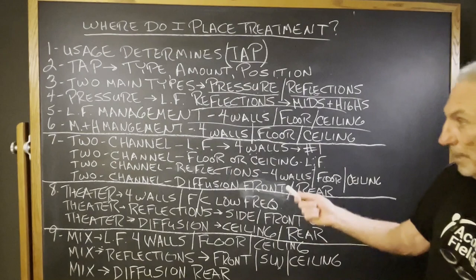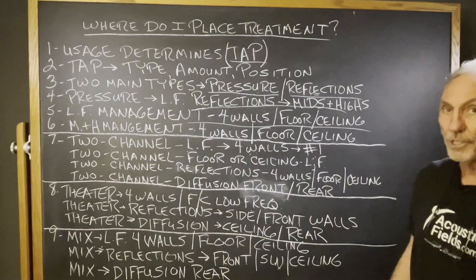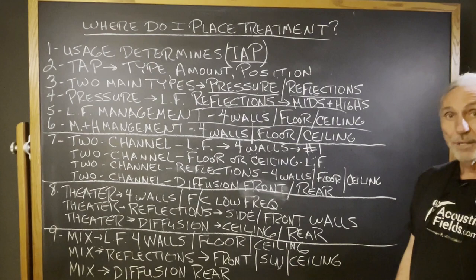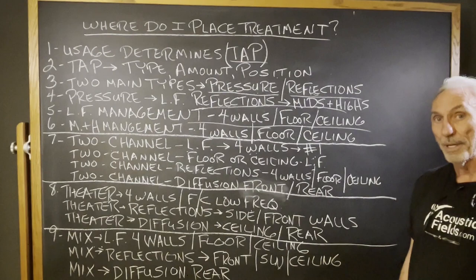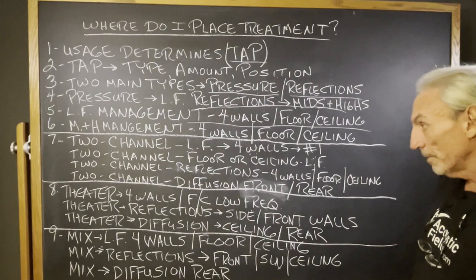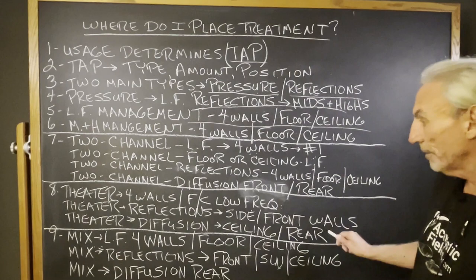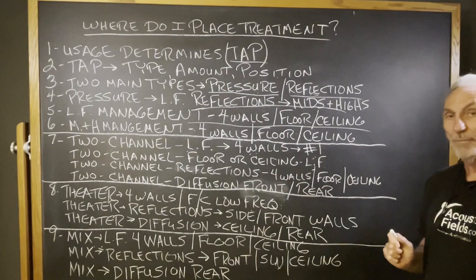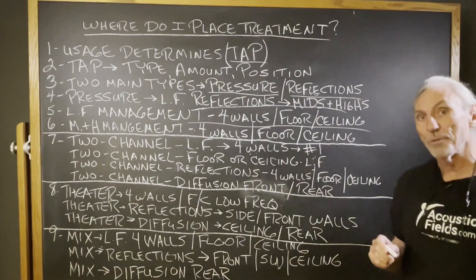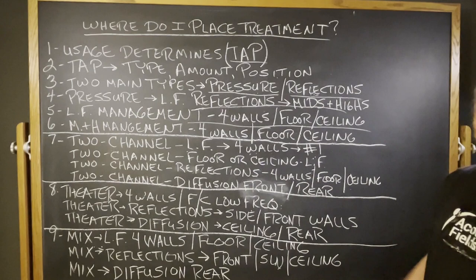For theater, four walls low frequency — you've got to do it. There's so much more energy than most of these rooms can contain with theater. Then we have reflections on the side and front walls. Diffusion in theaters — really the rear wall and ceiling. The biggest benefit we've found in rooms we've done: placing diffusion on the ceiling and rear wall will open it up, increase definition and resolution, and make the room sound larger.